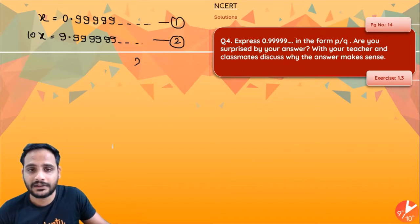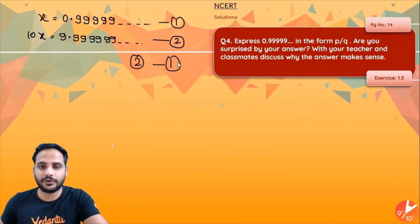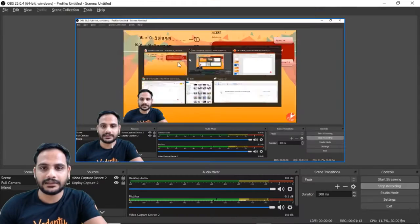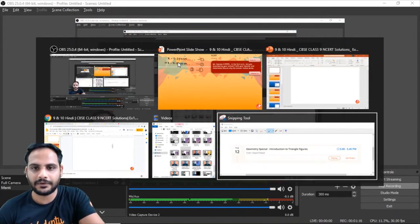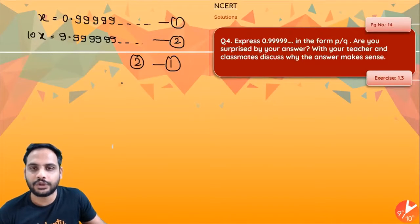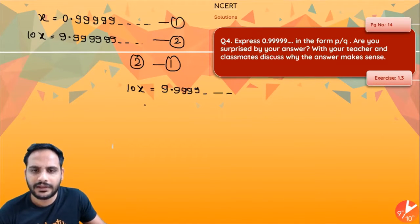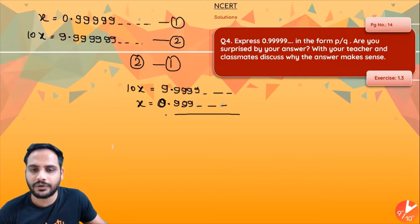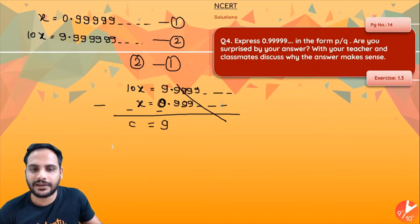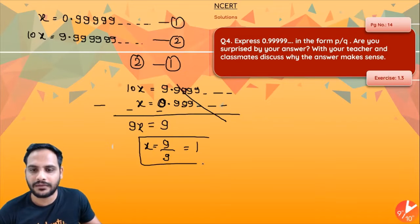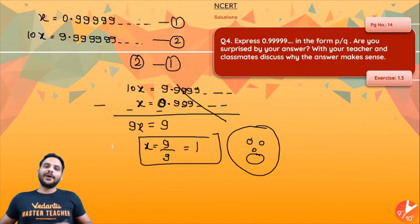Now subtract equation 1 from equation 2. So 10x minus x: the decimal part gets cancelled. 9 minus 0 is 9, and 10x minus x is 9x. So 9x = 9, which gives x = 9/9, which equals 1.